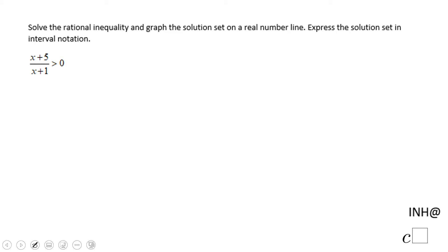Welcome or welcome back. I need help at C square. In this example here we need to solve what is called a rational inequality. For solving a rational inequality, you need to take the numerator x plus 5, make it equals to 0.